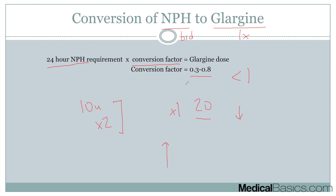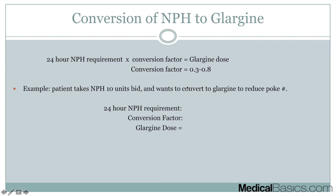Let's walk through an example. A patient takes NPH 10 units BID and wants to convert to glargine to reduce the number of pokes. Their 24-hour NPH requirement is going to be 20 units, and the conversion factor is 0.8. When we multiply these together, it's going to be 16. So they're going to take 16 units of glargine at nighttime. That's how we can convert between NPH to glargine, and there are similar ways to convert the different types of short-acting insulin as well, though I won't go into that here.